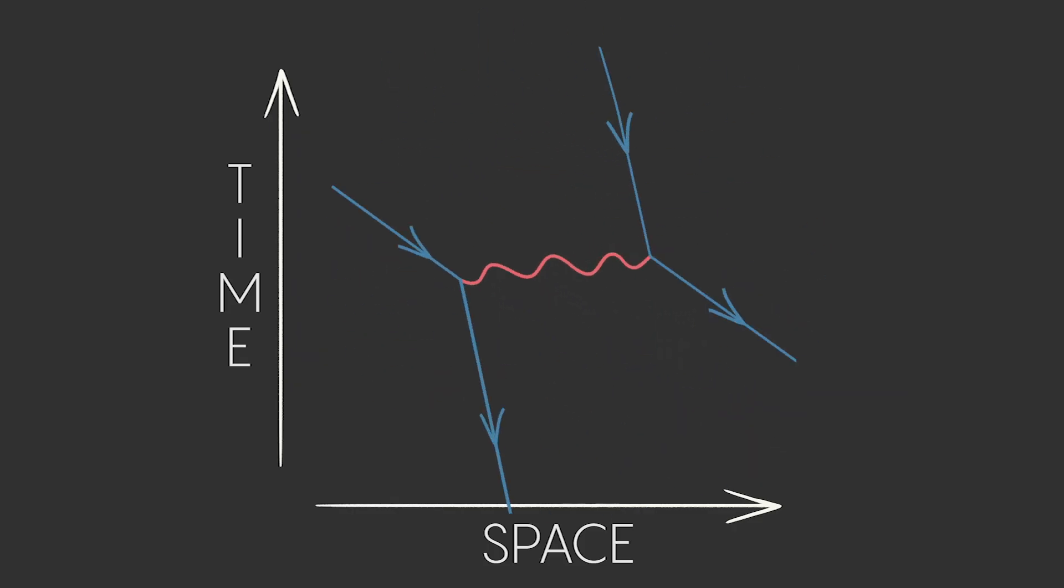Let's rotate this diagram. Now the arrows are pointing the opposite way, and represent positrons, or anti-electrons, moving and exchanging a photon.